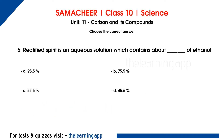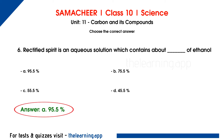Sixth question. A rectified spirit is an aqueous solution which contains about dash percentage of ethanol. Options are A. 95.5%, B. 75.5%, C. 55.5%, D. 45.5%. Correct answer is option A, 95.5%. Ethanol is an alcohol. The rectified spirit is an aqueous solution which contains 95.5% of ethanol. The remaining percentage is water.